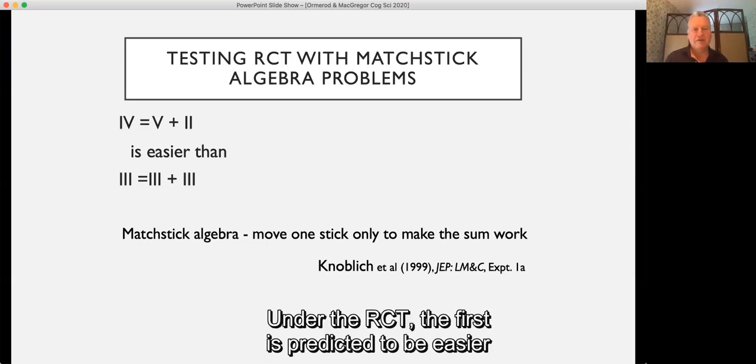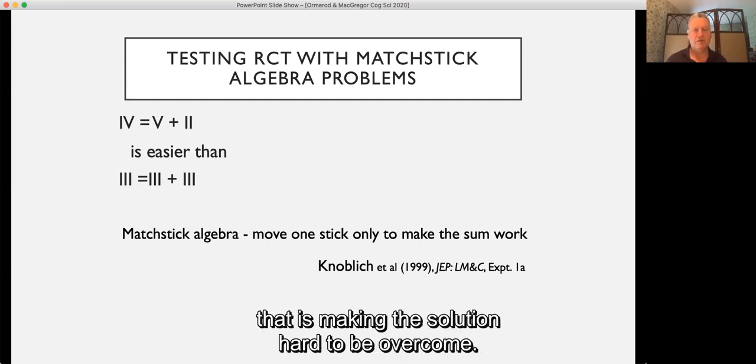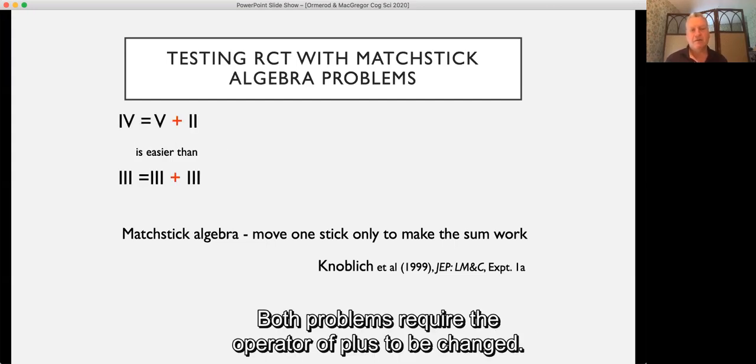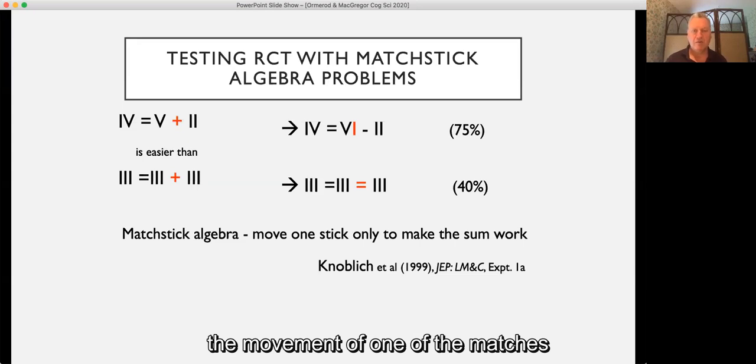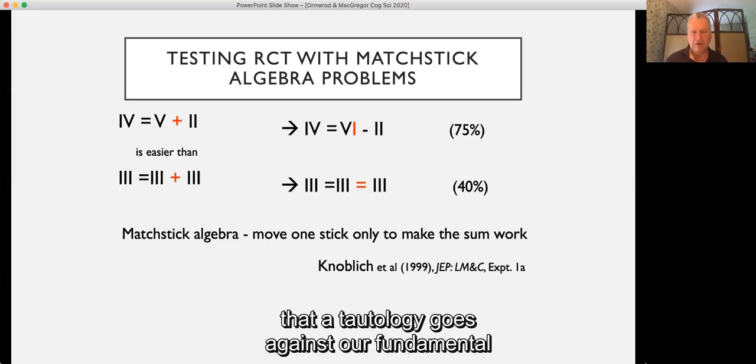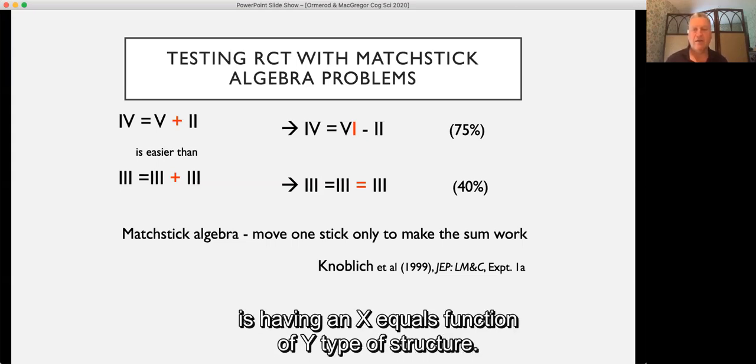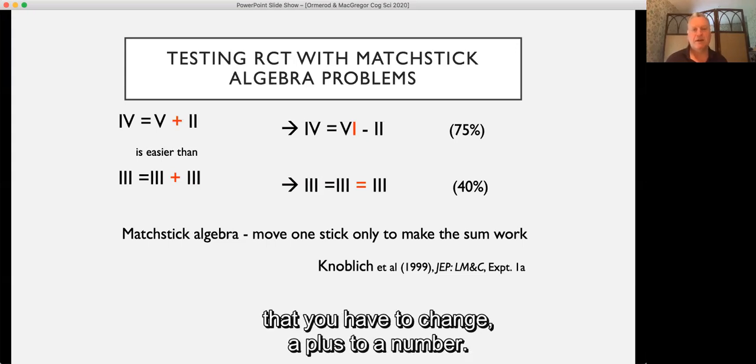Under the RCT, the first is predicted to be easier than the second because the second one requires mathematical knowledge that is so general and fundamental to all our understanding of mathematics. Both problems require the operator of plus to be changed. However, the first problem simply requires the movement of one of the matches to another number to make the sum work. The second problem, on the other hand, requires the creation of a tautology, and Knoblich and colleagues argue that a tautology goes against our fundamental understanding of mathematical equations as having an x equals function of y type of structure. Thus, to relax the constraint of that scope of knowledge is much harder than relaxing the scope that you have to change a plus to a number.